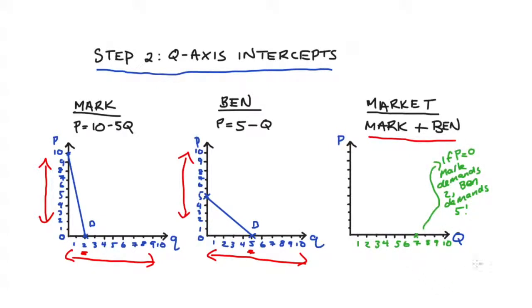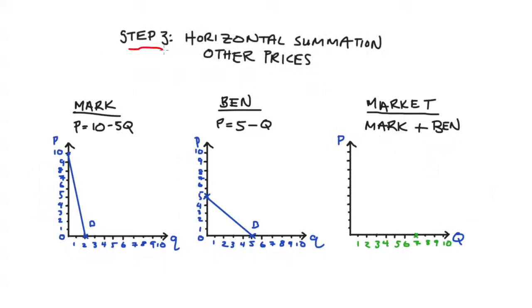I hope that's clear what we're doing. If the logic is clear you can start to see why it's called horizontal summation here. We are summing up the quantities that each individual is demanding, where quantity is the horizontal variable, and the trick is we're going to look at that horizontal summation for a range of prices or the prices that are relevant.